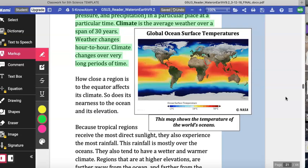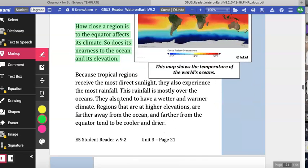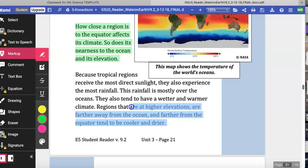How close a region is to the equator affects its climate, so does its nearness to the ocean and its elevation. Because tropical regions receive the most direct sunlight, they also experience the most rainfall. This rainfall is mostly over the oceans. They also tend to have a wetter and warmer climate. Regions that are at higher elevations and are farther away from oceans and farther away from the equator tend to be cooler and drier.